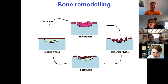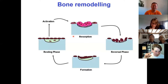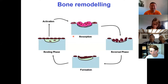So that cycle goes around, and at any one time in your body there are approximately three million of these little remodelling sites going on. Three million remodelling potholes in your skeleton — and that means you replace 10 percent of your skeleton in a year.